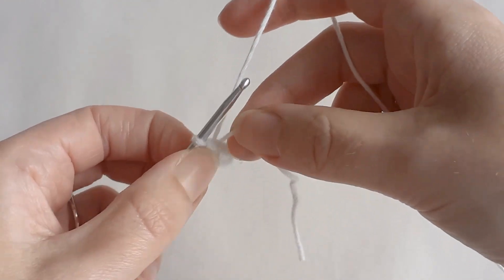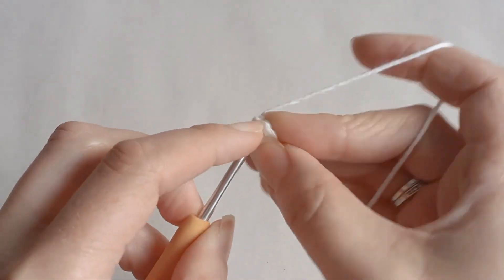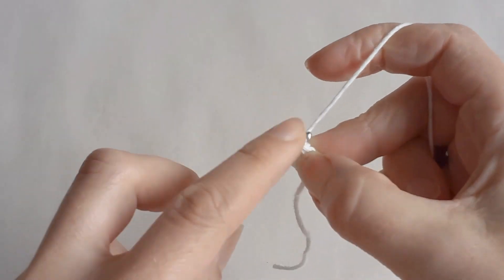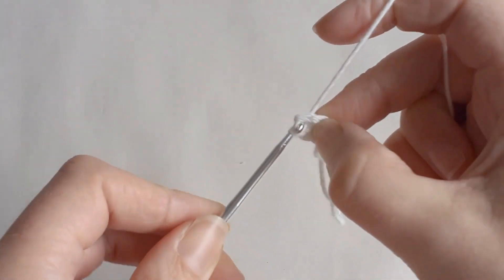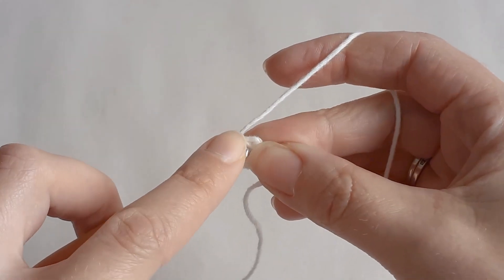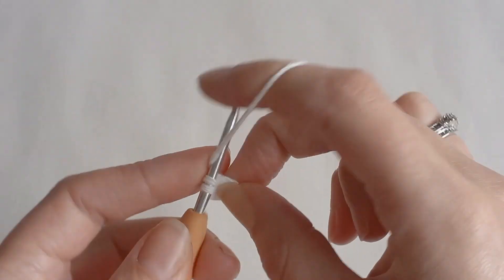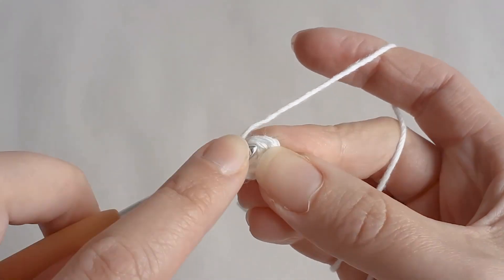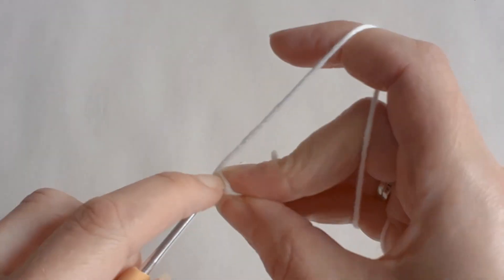The next row I'm going to increase from four to six, so I'm going to make one single crochet, one increase in the next stitch, one single crochet, and one increase in the last stitch.